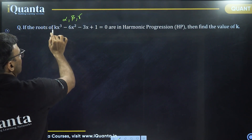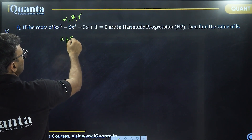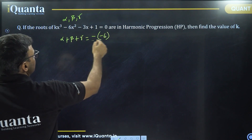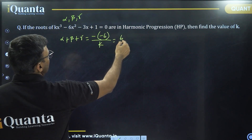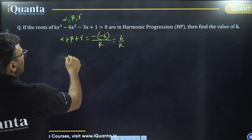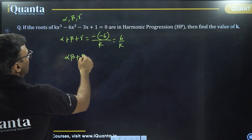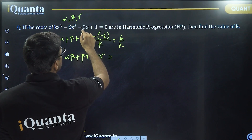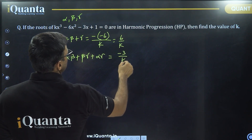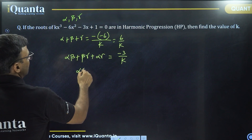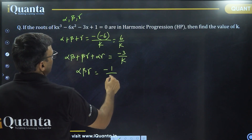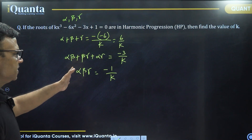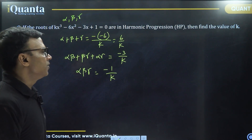If the roots are alpha, beta, gamma, then the sum of roots alpha plus beta plus gamma should be equal to minus of the coefficient of x squared term, that is minus 6, divided by the coefficient of x cubed term k. So it is 6 by k. Similarly, alpha beta plus beta gamma plus alpha gamma should be equal to the coefficient of x, that is minus 3, divided by the coefficient of x cubed, that is k. And alpha beta gamma should be equal to minus of the constant term divided by the coefficient of x cubed. This gives us the sum of roots and product of roots from the polynomial.